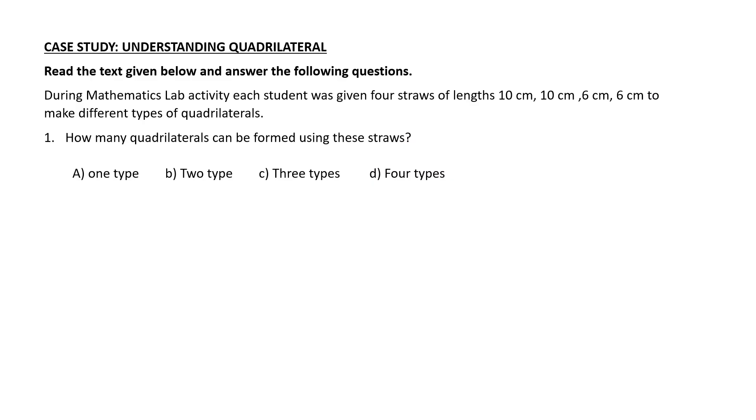The question is, during mass lab activity, each student was given four straws of length 10 cm, 10 cm, 6 cm, 6 cm to make different types of quadrilaterals. First question is, how many quadrilaterals can we form using these straws? Option A: 1 type. Option B: 2 types. Option C: 3 types. Option D: 4 types.